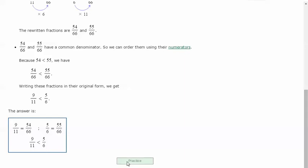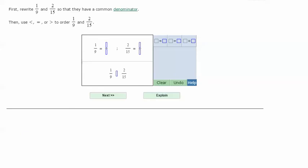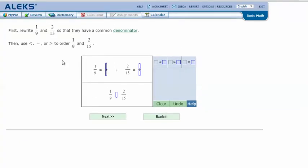Let's try another one. First, rewrite 1/9 and 2/15 so that they have a common denominator. Then use less than, equal to, or greater than to order 1/9 and 2/15.